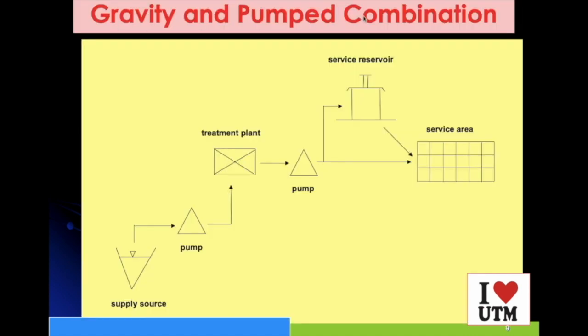For the gravity and pump system, they are combining different types of systems. Although the water supply is below the level of the service area or even at the same level of the service area, they have pumping rate to the treatment plant. This is where we treat water. Then after disinfection, it will be distributed.